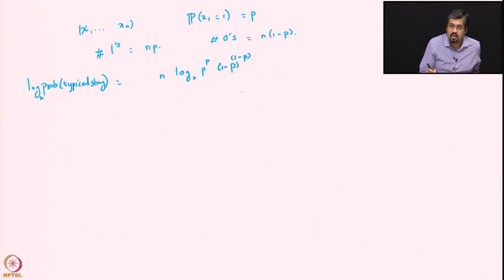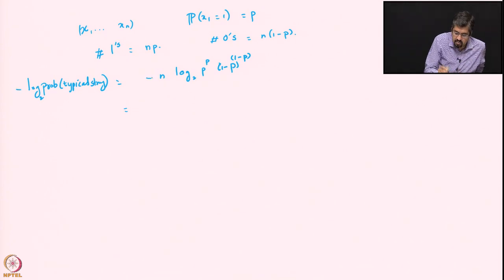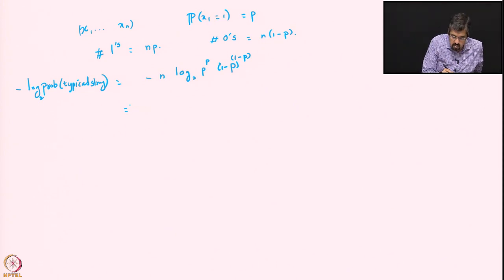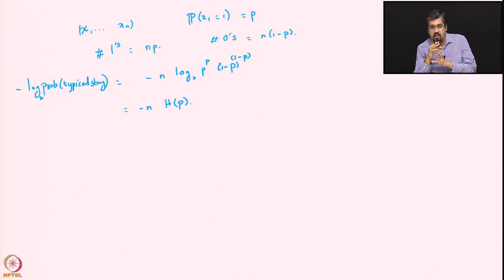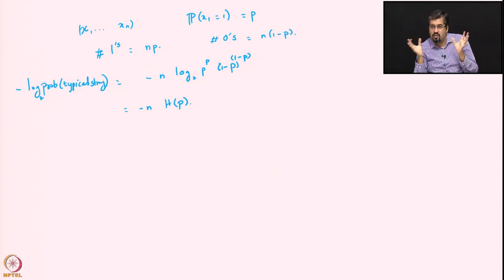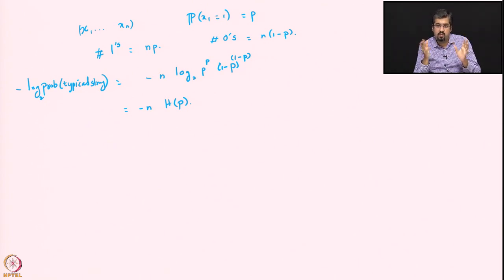Taking the log of the probability of a typical string gives n times log_2(p^p × (1-p)^{1-p}) = -n·H(p). So the entropy is essentially (1/n) times the log of the probability of a typical string — that is the intuition for where entropy comes from.